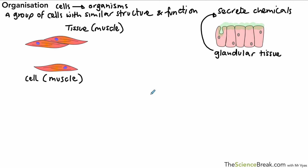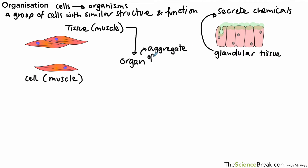Tissues are often joined together in the body to make what we call organs. An organ is basically a group of different tissues working together — we can describe it as an aggregate of tissues performing a particular function.